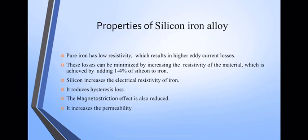Properties of silicon iron alloy: pure iron has low resistivity, which results in higher eddy current. Adding silicon increases the electrical resistivity and reduces the hysteresis loss and magnetostriction effect. It increases the permeability and reduces the eddy current loss.